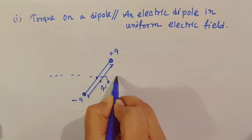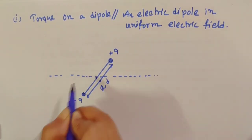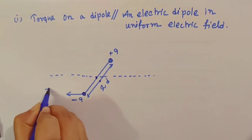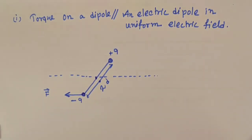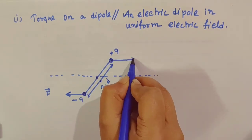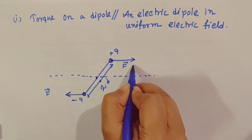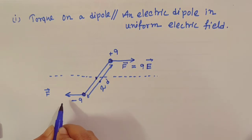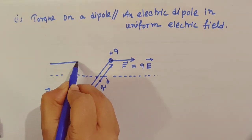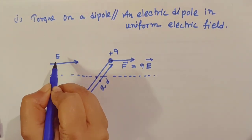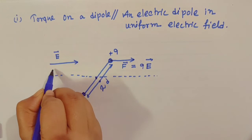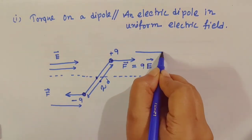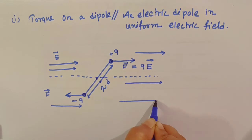Consider a line passing through the middle point. Now, force here is F and the direction of force you can see by this arrow. Here force is just opposite. So F is equals to QE, and here also F is equals to QE. Electric field is directed along this direction.